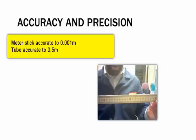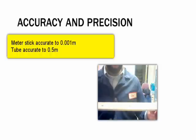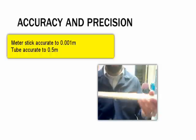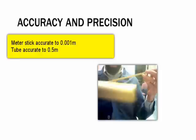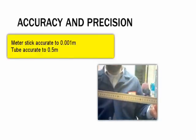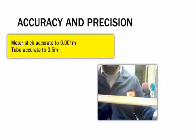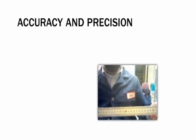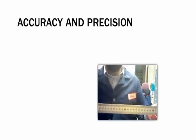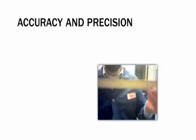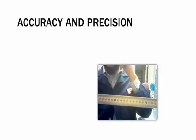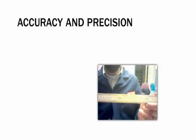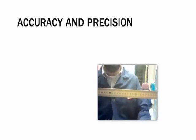With the meter stick, I can be accurate to the 0.001 meter, as opposed to the 0.5 meter. So when we're using our tools, it's very important that we look at how accurate it is, and then when we do our calculations, it's very important that we look at how accurate our science tools were in determining those measurements. We'll get much more into that when we get into significant digits.